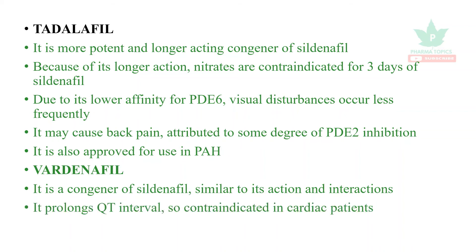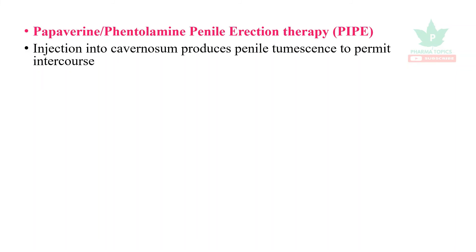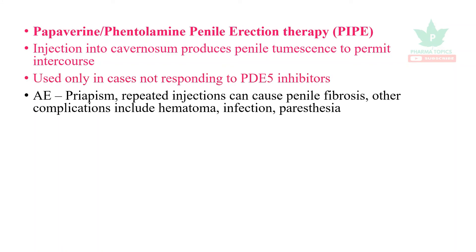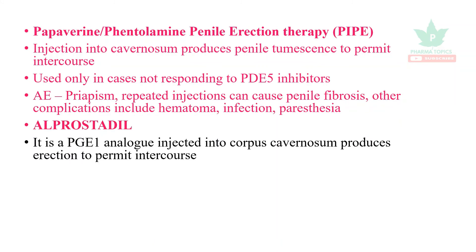Other therapies include papaverine combined with phentolamine, administered as a penile injection into the cavernous space to produce erection and permit intercourse. This is used only in cases where PDE5 inhibitors are refractory. Adverse effects include priapism, and repeated injections may cause penile fibrosis, hematoma, infection, and paresthesia. Alprostadil, a PGE1 analog, is injected into the corpus cavernosum before intercourse to induce erection.